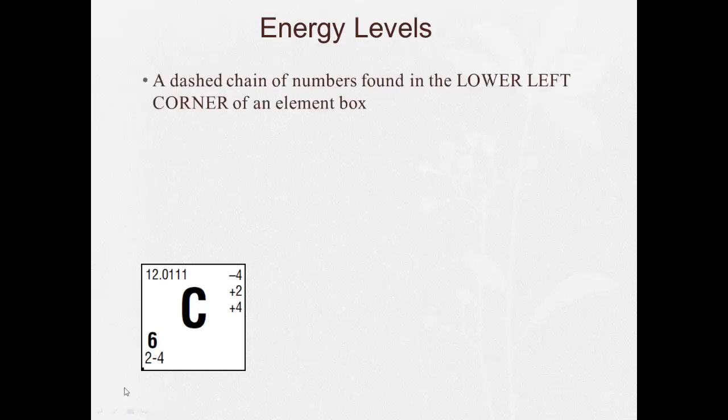If we look back to our periodic table, in the lower left corner of every single element, there's this dashed chain of numbers. Now carbon just has two of them with one dash, but other ones will have more numbers with more dashes. And that tells us the number of energy levels. To get the number of energy levels, I count the numbers. So there's one, two numbers. That means carbon has two energy levels.